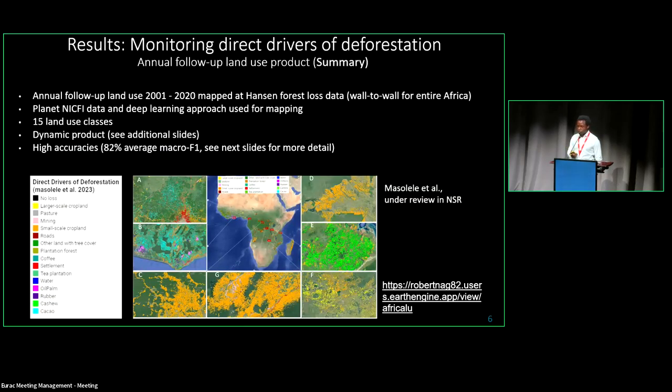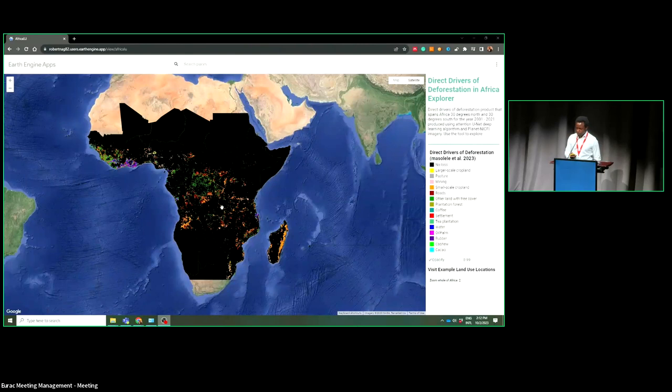In the end, we were able to produce the follow-up land use map covering Africa 30 degrees north to 30 degrees south for 15 classes. This includes all forest loss which occurred between 2001 to 2020. We assessed the map with an accuracy of around 82%. This is the output which we produce, basically based on areas which is covered by planet NICFI data.